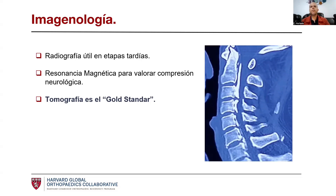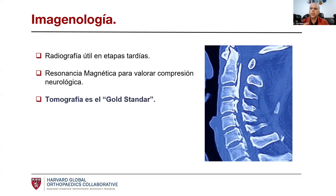En cuanto a la imaginología, la radiografía puede ser útil normalmente en etapas tardías. En las etapas tempranas, las limitaciones de la sombra de los hombros y la técnica propia de la radiografía simple no van a ser lo más adecuadas, pero en etapas tardías sí puede ya observarse los cambios. La resonancia magnética es útil para evaluar compresión neurológica y buscar la hiperintensidad en T2, como un factor de mal pronóstico que avala el tiempo de compresión que ya lleva el paciente.